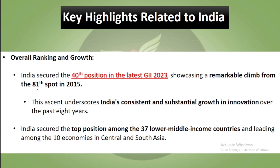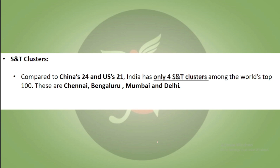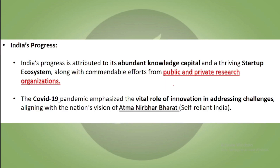Among the key highlights, India's 40th position represents a remarkable climb — India was ranked 81st in 2015. This ascent shows India's consistent and substantial growth in the innovation sector over the last 8 years. India holds a top position among 37 lower middle-income countries and is a leading economy in the Central and South Asia region. Regarding science and technology clusters, China has 24 and the US has 21, but India has only 4 cities — Chennai, Bengaluru, Mumbai, and Delhi.